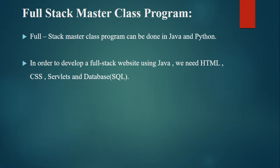In order to develop a full stack website using Java, we need HTML — the user interface part. You can consider any type of industry: e-commerce, hospital management system, railway reservation system, or counseling management system. The front-end user interface elements will be designed using HTML (Hypertext Markup Language) and CSS (Cascaded Stylesheet). The business logic will be executed in the servlets, and all transactions will be stored securely in the database. To interact with the database, we require SQL — Structured Query Language.